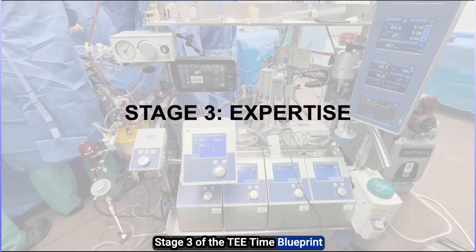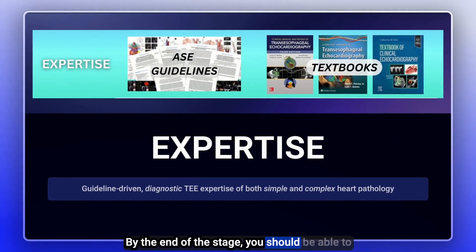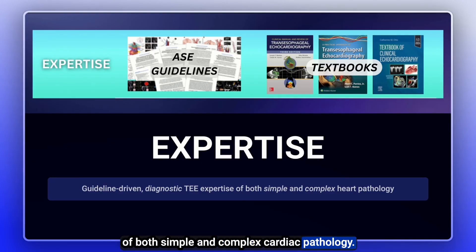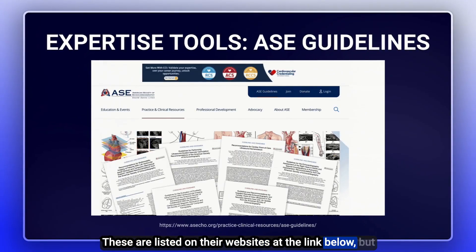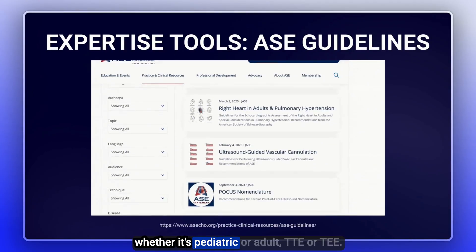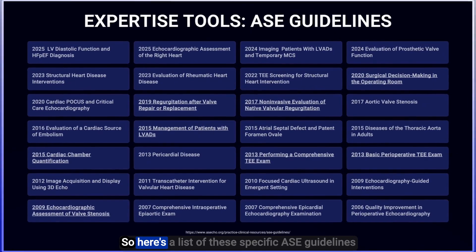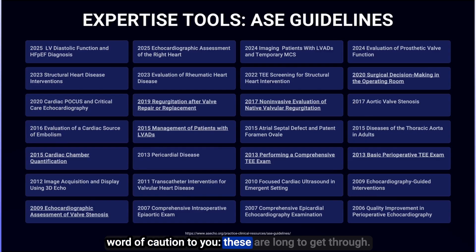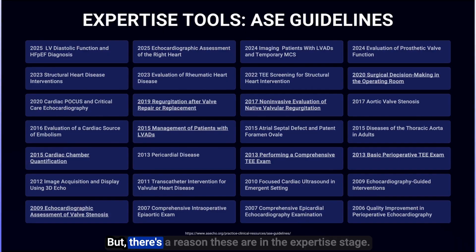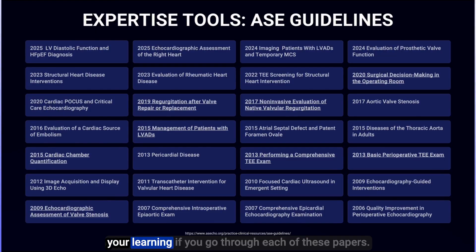Stage three of the TEE Blueprint is the expertise stage. By the end of this stage, you should be able to exhibit guideline-driven diagnostic TEE expertise of both simple and complex cardiac pathology. The first expertise tool I want you to utilize are the American Society of Echocardiography guidelines, listed on their website. These guidelines cover all things echocardiography, whether it's pediatric or adult, TTE or TEE. I've underlined what I think are the highest yield ones if you want to just read a few. These are in the expertise stage for good reason — they take time and investment, but they are high yield.